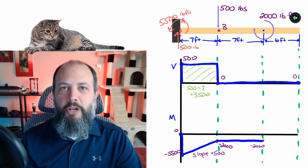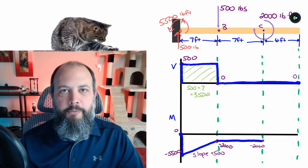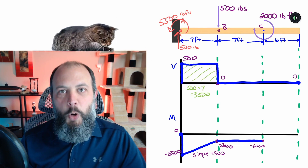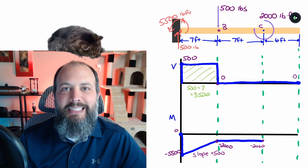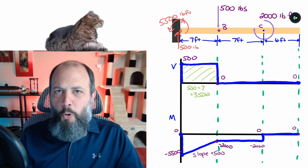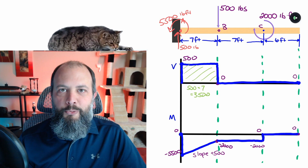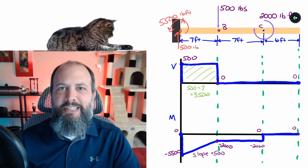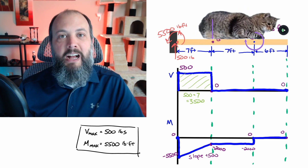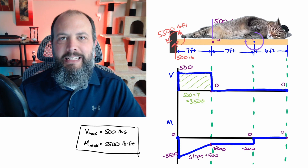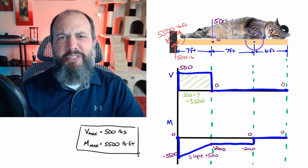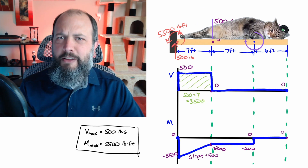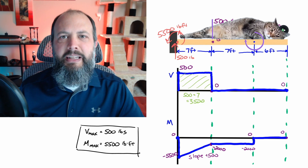During the next seven feet, there's zero on the shear diagram and no point moments on the free body diagram. At point C there's a point moment — its arrow points upward on the left-hand side, so the moment diagram jumps straight up by 2,000, bringing it back to zero. During the final six feet there's no shear and no point moments, so the moment diagram goes straight to the right along zero. Those last six feet carry no forces, so there's no stress there at all. Maximum shear: 500 pounds. Maximum moment magnitude: 5,500 pound-feet.